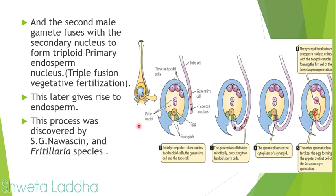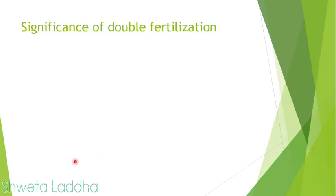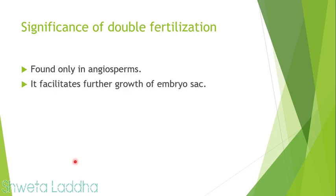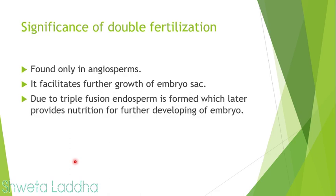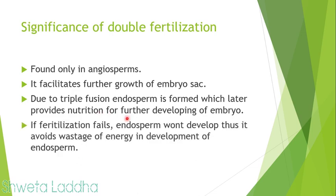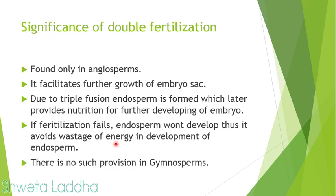This process of double fertilization in endosperms was discovered by S.G. Navaschin in the case of Fritillaria species. The significance of double fertilization: it is found only in angiosperm plants; it facilitates growth of the embryo sac; and due to triple fusion, endosperm is formed which provides nourishment to the developing embryo. If fertilization fails, no endosperm is formed, avoiding wastage of energy. This provision is not present in gymnosperms.